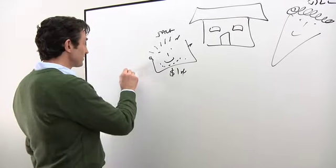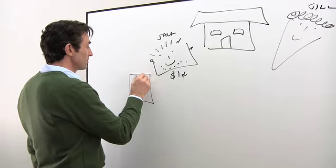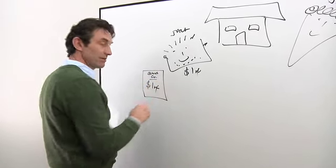I have got an independent appraisal of this house from, let's say, the Johns Corporation saying that this house is worth a million dollars. Look, here's a piece of paper, it says it.